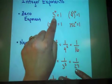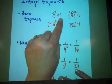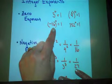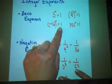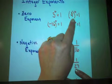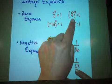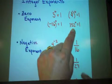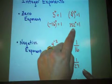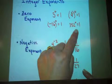So 3 to the zero power is 1. A negative number like negative 16 raised to the zero power is 1. A fraction raised to the zero power, like 2 sevenths to the zero, is 1. And even a large number like 352 raised to the zero power is 1. That's what a zero exponent does.